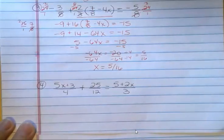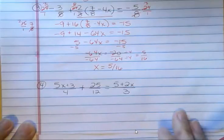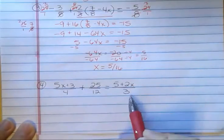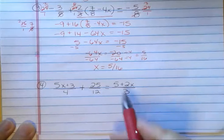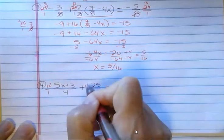And that is figure out what the LCD is and multiply everything by it. And then continue from there. So the LCD for this problem is 12. So I'm going to multiply everything times 12.